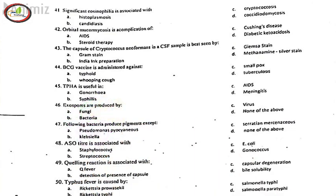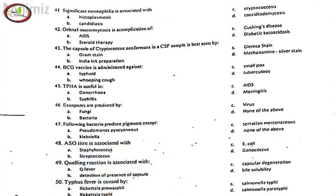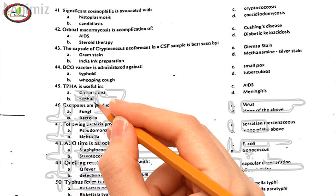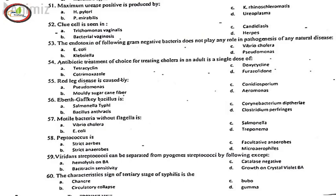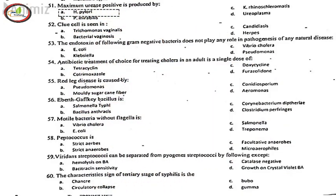47. Following bacteria produce pigments except, D. None of the above. 48. ASO titer is associated with, B. Streptococcus. 49. Quellung reaction is associated with, B. Detection of presence of capsule. 50. Typhus fever is caused by, A. Rickettsia prowazekii. 51. Maximum urease positive is produced by, A. H. pylori.